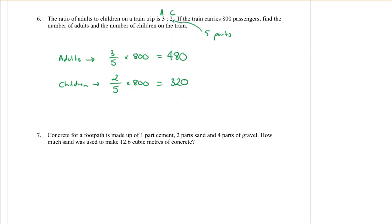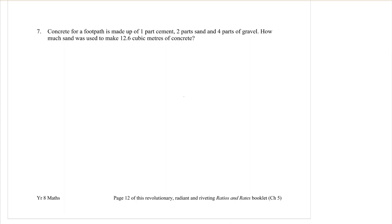Question 7: Concrete for a footpath is made up of 1 part cement, 2 parts sand, and 4 parts gravel. So I thought I'd just write that down again as the ratio with my dots, and just put cement, sand, and gravel underneath each one so I know what each number is. First thing I'm obviously going to do is add those parts up: 7 parts in my ratio.